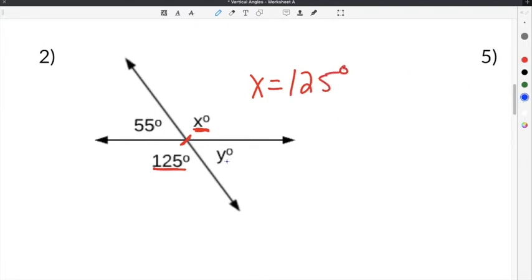And if this angle y, which we do not know, but is vertical with an angle that is 55 degrees, that means that y also has to be 55 degrees.